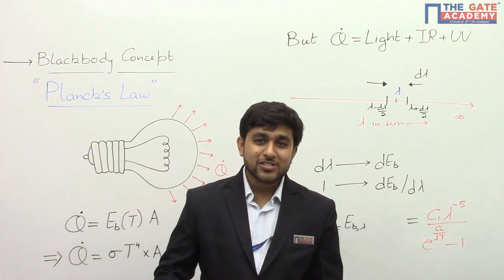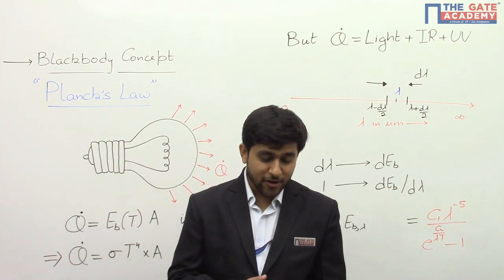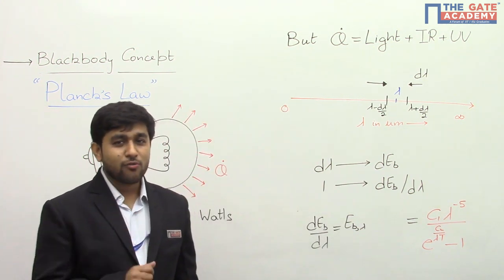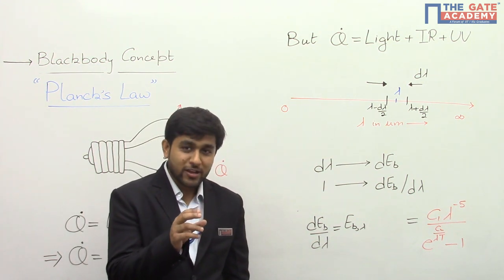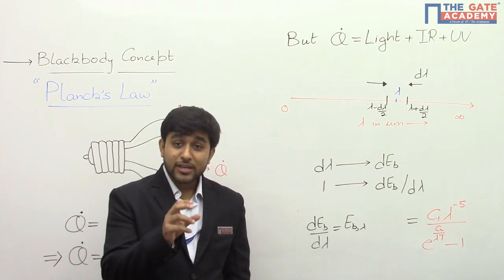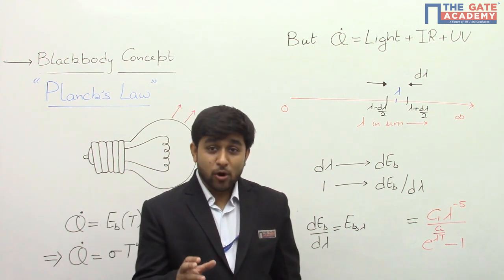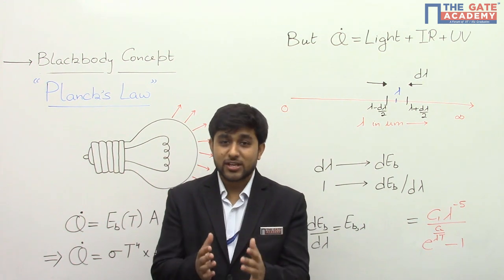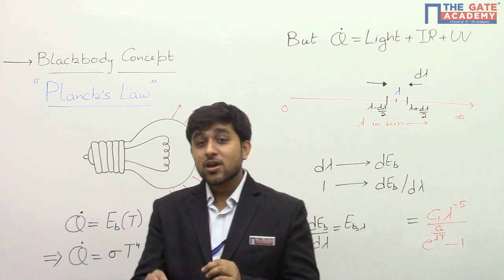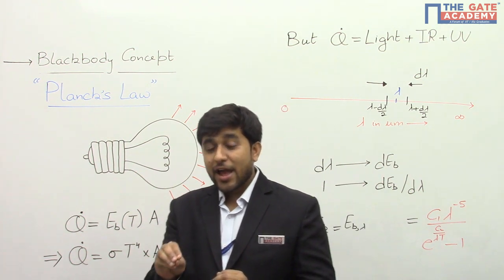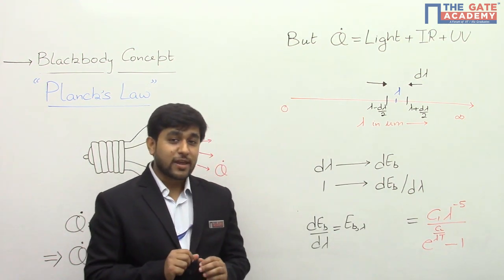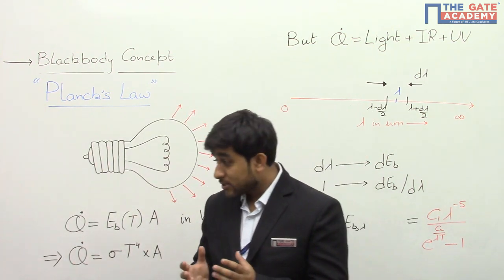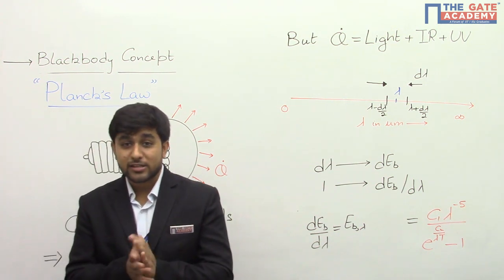Hello everyone, this is the third video in the series. By now we have discussed what thermal radiation is in video one — we covered the definition of electromagnetic waves, the electromagnetic spectrum, the properties of electromagnetic waves, and what thermal radiation actually is. Thermal radiation means ultraviolet plus light plus infrared, which are emitted because of the temperature of the body. Other waves are also there due to temperature, but the amount of energy corresponding to them is very negligible.